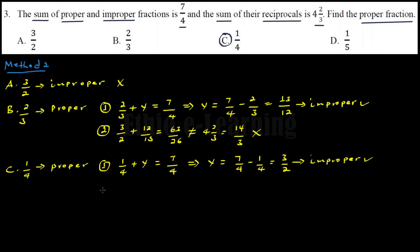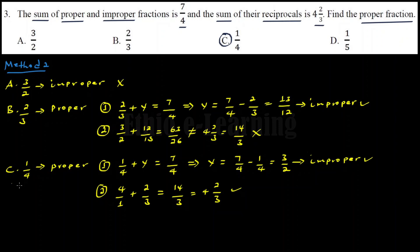Both given conditions are satisfied: the proper fraction reciprocal is 4 over 1 (1 over 1/4), and the improper fraction reciprocal gives the correct sum. Therefore the proper fraction is confirmed as 1 over 4, and the final answer is correct.